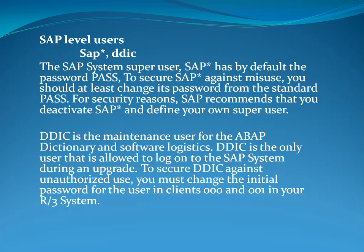The next user is DDIC. DDIC is the maintenance user for the ABAP dictionary and software logistics. DDIC is the only user that is allowed to log on to the SAP system during an upgrade. To secure DDIC against unauthorized use, you must change the initial password for the user in clients 000 and 001 in your R3 system.